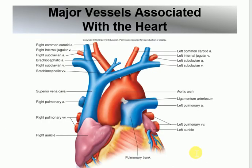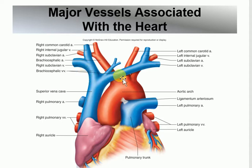Looking at this picture, the superior vena cava is up here and the inferior vena cava is down here. The branches coming off the superior vena cava are the right brachiocephalic and the left brachiocephalic. You need to know right from left — it's not enough to just say brachiocephalic.